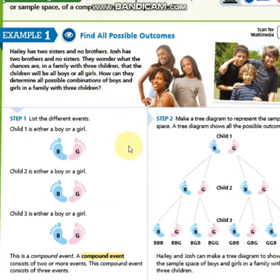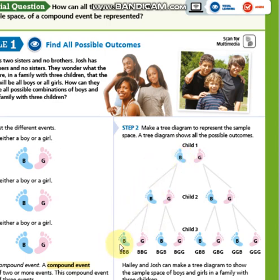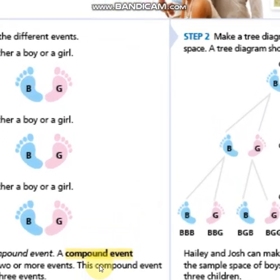Let's see example number one. This is a very nice example. We have a family that wants to have three kids and they are wondering what are the possible combinations. So the first child could be a boy or a girl. If they have a boy, then they could have another boy or a girl. The third child could again be a boy or a girl. This is what we call compound events — we have a combination of possibilities.